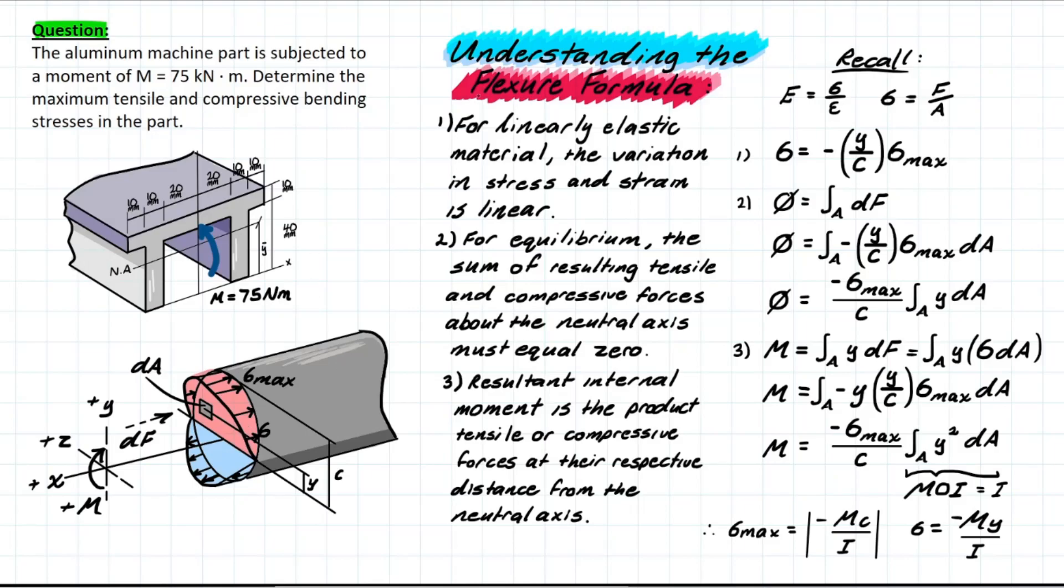Now, as for the formula, what is important and how can we break it down so that it makes sense, like where it came from in the first place? The first point that we need to understand is that for linearly elastic material, which is something we briefly touched on, the variation in stress and strain is linear. So what this relationship is talking about is the fundamentals of Hooke's Law.